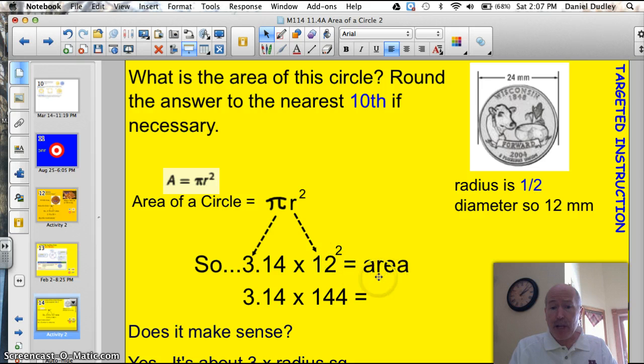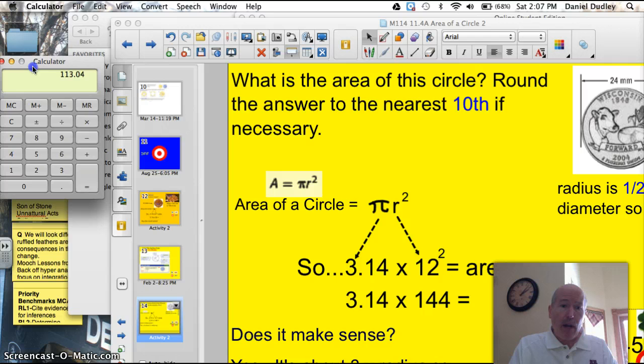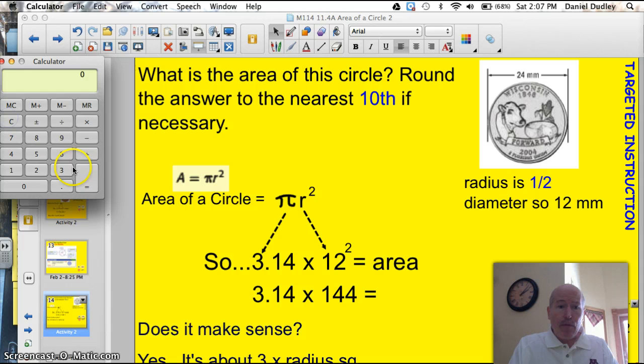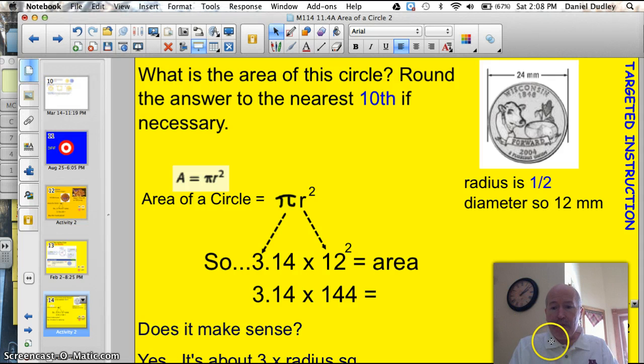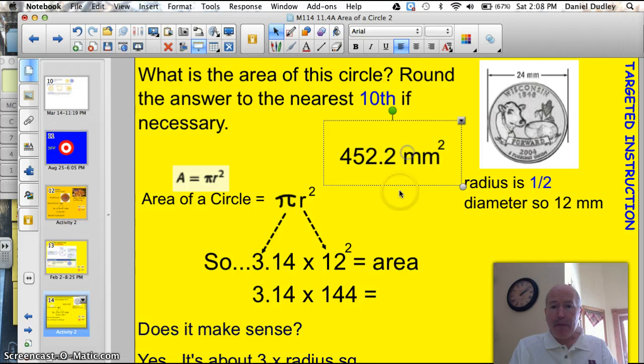So, 3.14 times 144, because 12 times 12 is 144, equals 452.16 when I put it in my calculator. Now I have to round to the nearest tenth. When I look at this number, the tenths place, I look next door - that 6 is large enough to round up. So my answer then becomes 452.2 millimeters squared. I'm going to slide that right up there so you can see it.